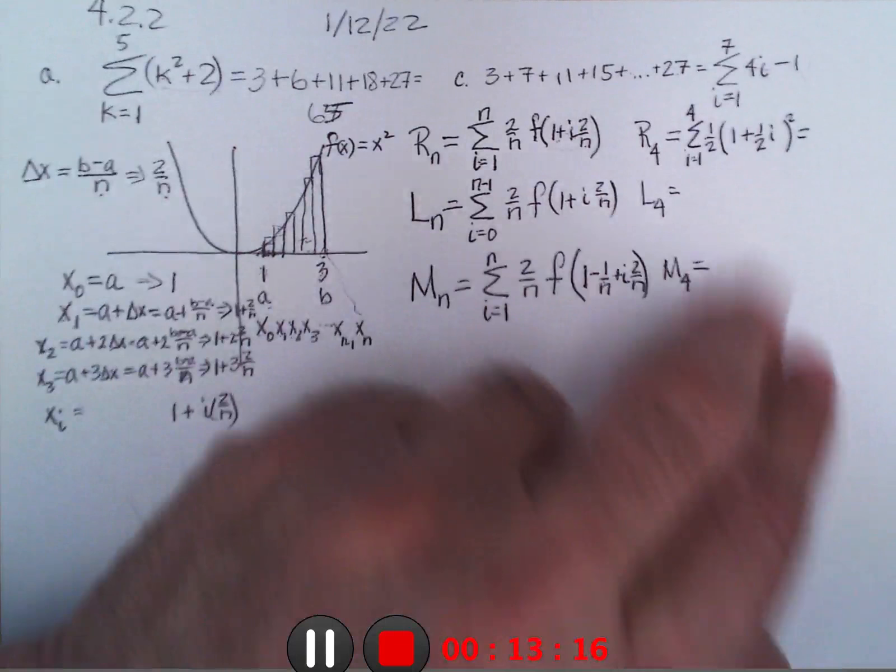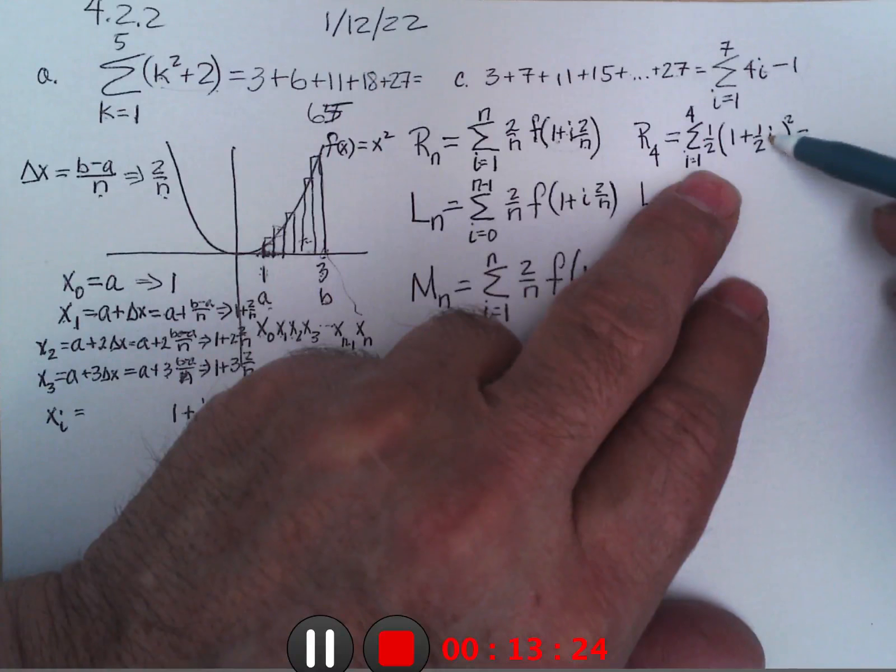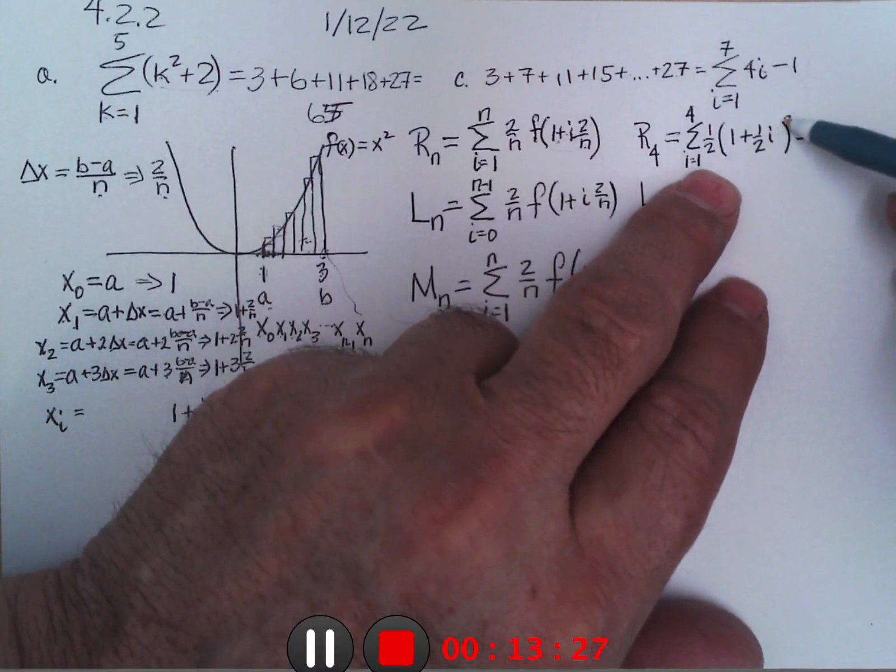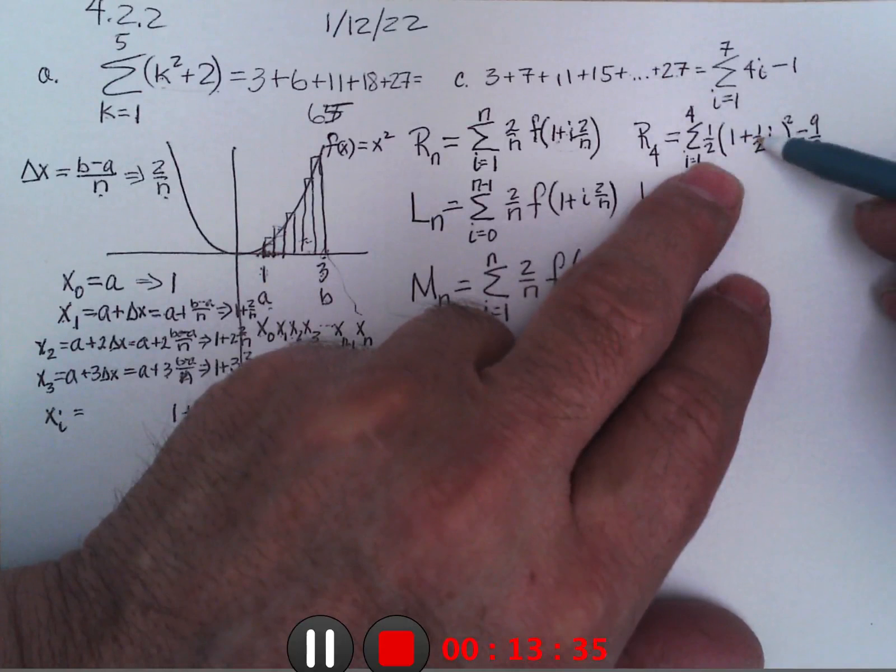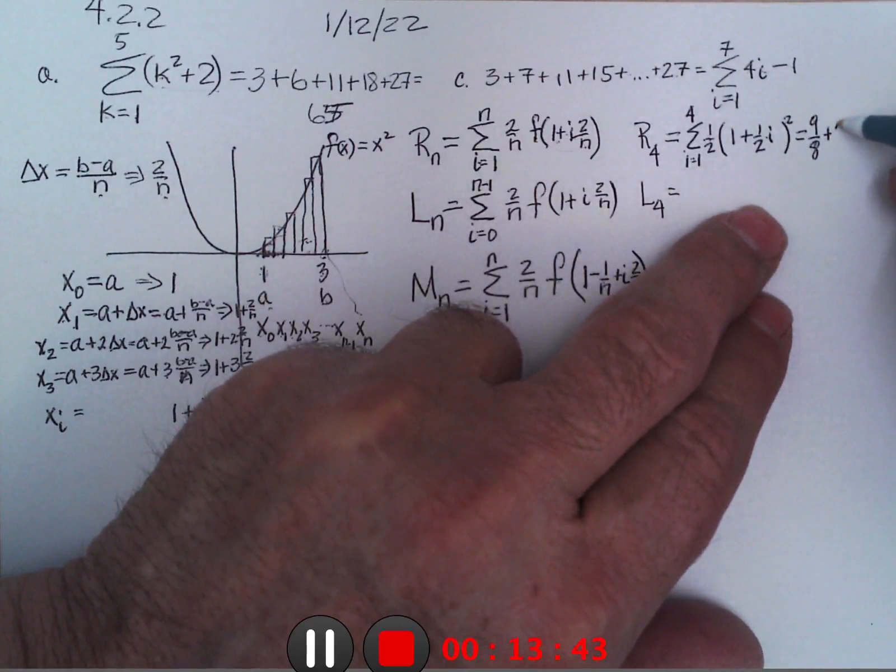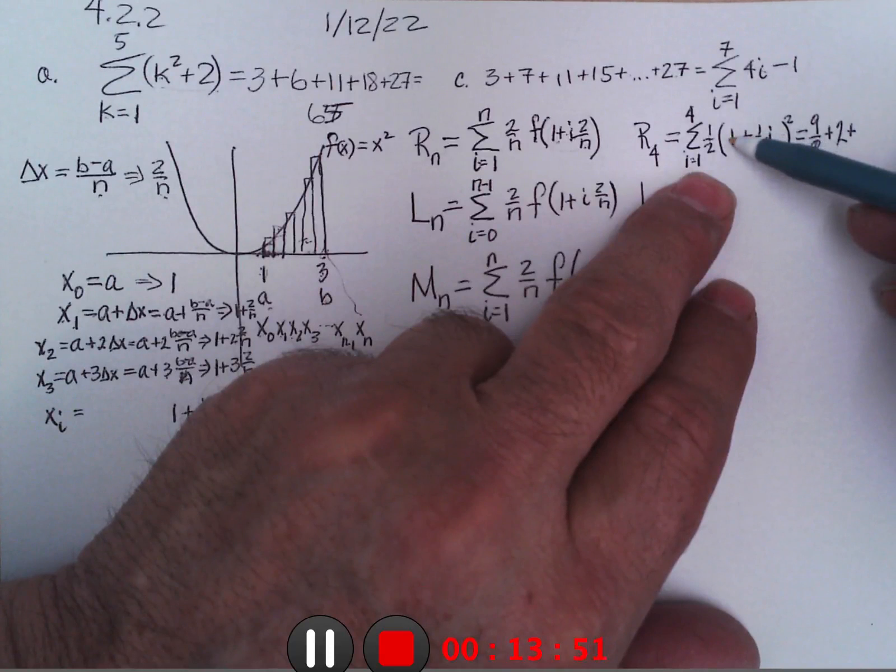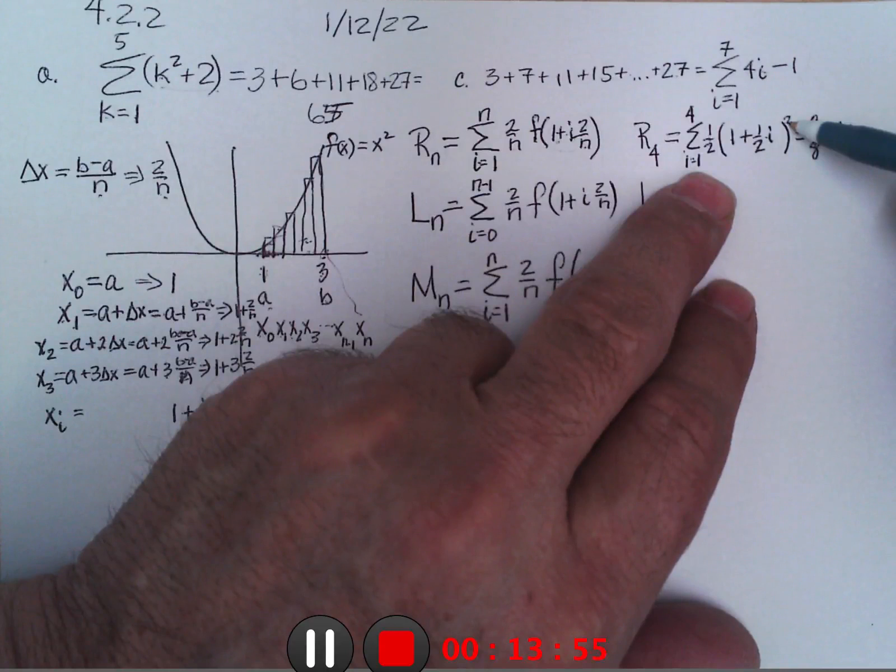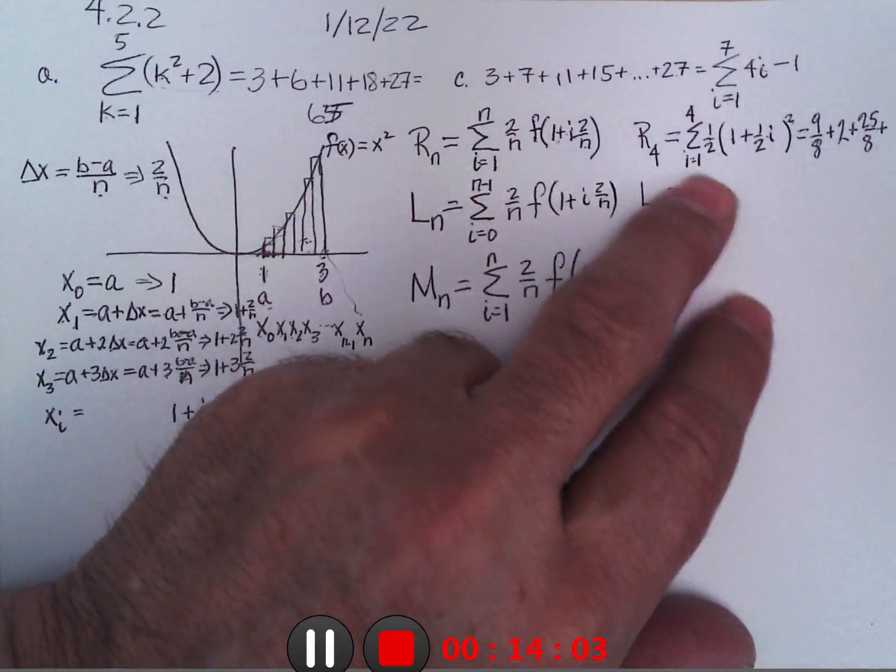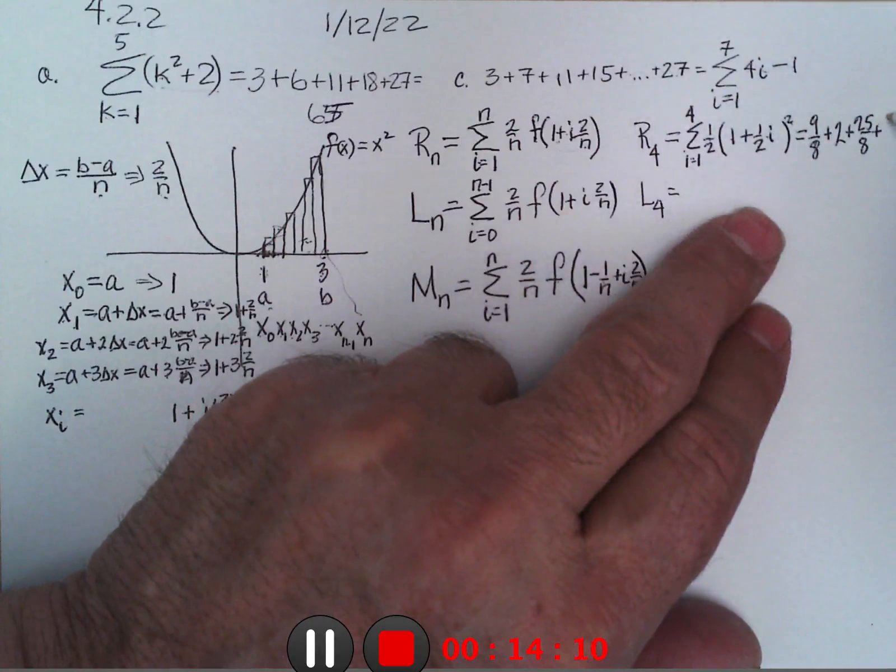So putting in 1, 2, 3, and 4: putting in 1 I get 1 plus 1 half which is 3 halves squared is 9 fourths times a half is 9 eighths. Put in 2, 2 times a half is 1 plus 1 is 2, squared is 4 times a half is 2. Plus put in 3, 3 times a half is 3 halves plus 2 halves is 5 halves, squared is 25 sixteenths times a half. Plus put in 4: 2 plus 1 is 3 squared is 9 times a half is 9 halves.